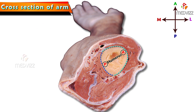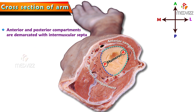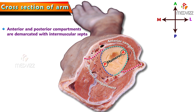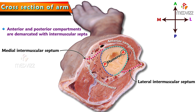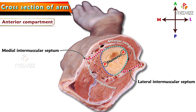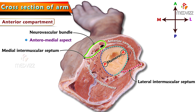We can clearly demarcate anterior and posterior compartments with the help of intermuscular septum. Here is the medial intermuscular septum and this is the lateral intermuscular septum. The medial side can be identified by seeing this large neurovascular bundle which is present on the anteromedial aspect of the arm. You can also see muscle adherent to the shaft of the humerus on both anterior and posterior surfaces.